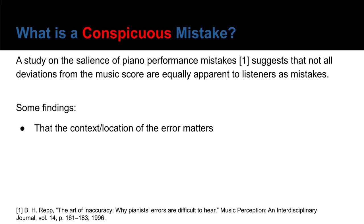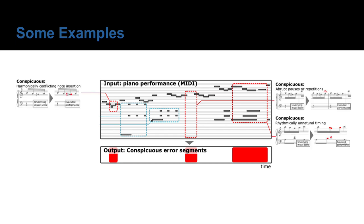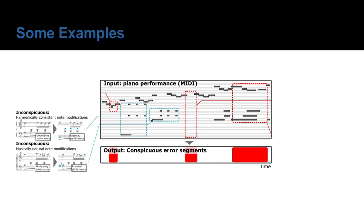Another important finding is that there are shared traits between those mistakes, suggesting that they could be learned. So for this example, if this MIDI roll is input to our system, we'd like it to output high error probabilities for the areas in the red boxes, since they correspond to harmonically conflicting note insertions, abrupt pauses or repetitions, etc. And we'd like it to ignore the areas in the blue boxes, since these are deviations that are harmonically very sensible, such that no one who doesn't know the score well would detect them anyway.